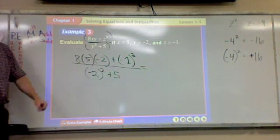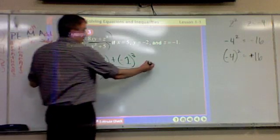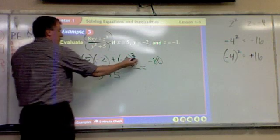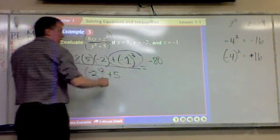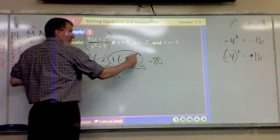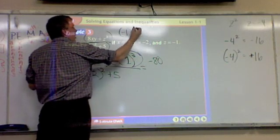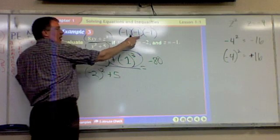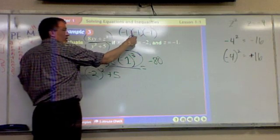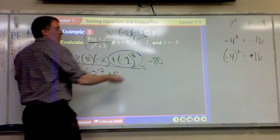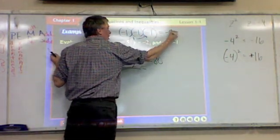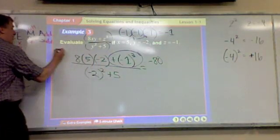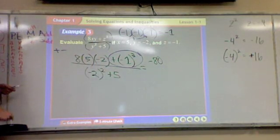8 times 5 times negative 2 is negative 80. I'm going quick. Here's where it gets a little bit tricky. This says negative 1 times itself how many times? So it's negative 1 times negative 1 times negative 1. So when I go here to here, I get what? Positive 1. And then I go another time and I get negative 1. But it's plus a negative 1. What's plus a negative make? Minus. It takes two minuses to make a plus.